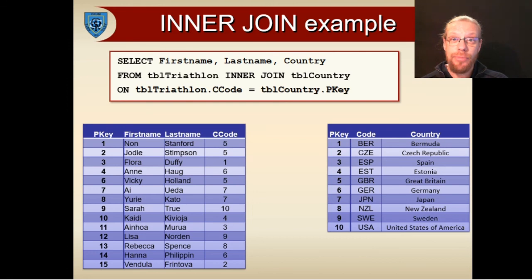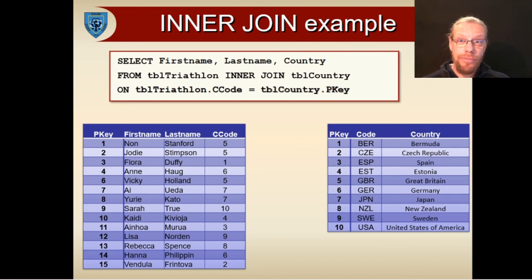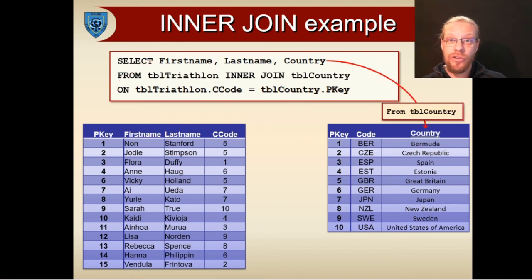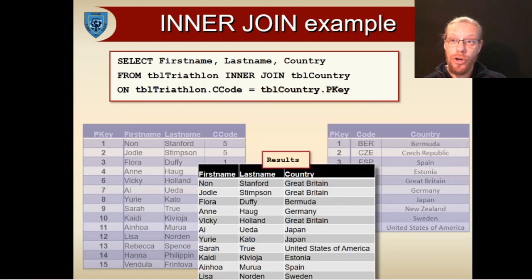Let's look at how this works in practice. In this example, two tables are used to describe data relating to the triathlon event. The first table lists athletes and the second table lists countries. The C_Code field in table triathlon is the foreign key in a one-to-many relationship with the primary key, P_Key, in table country. In this merge, we'll display the first name and last name from table triathlon and country from table country. Notice how the relationship between the two tables is specified using INNER JOIN, which we can use to return results that merge data from the two tables.